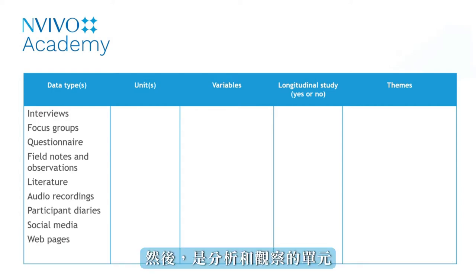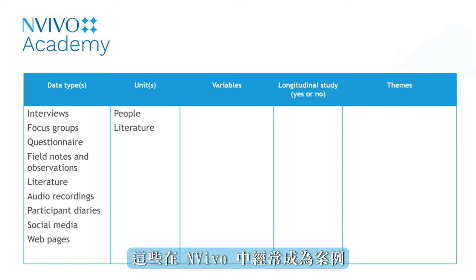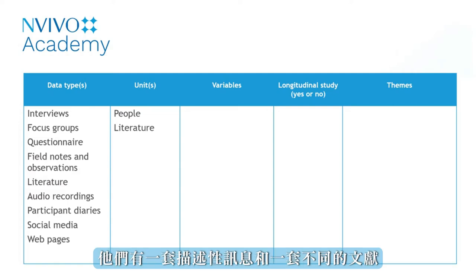Then there are the units of analysis and observation. These often become cases in NVivo. In this example, we have two people who will have one set of descriptive information, and literature which will have a different set.